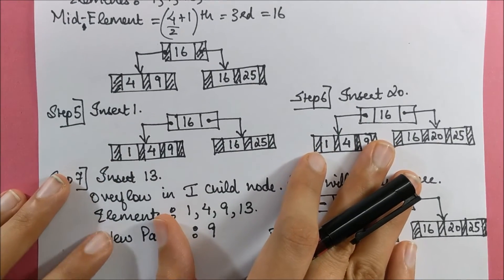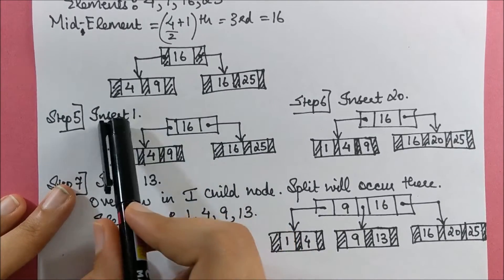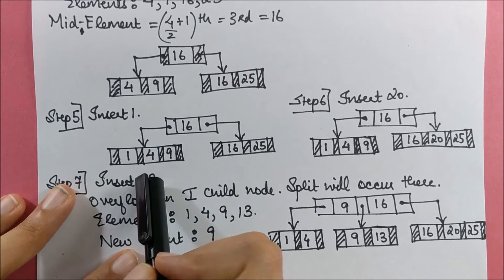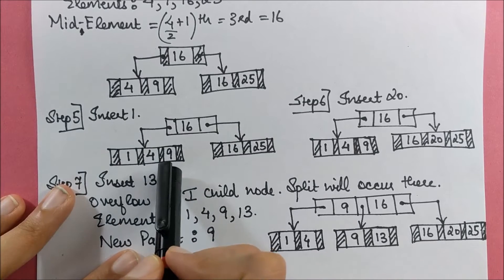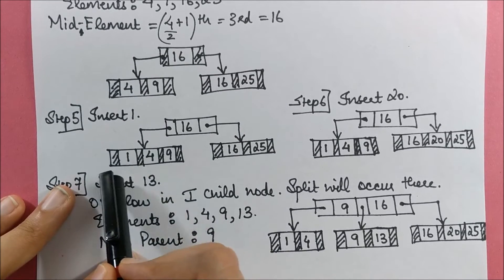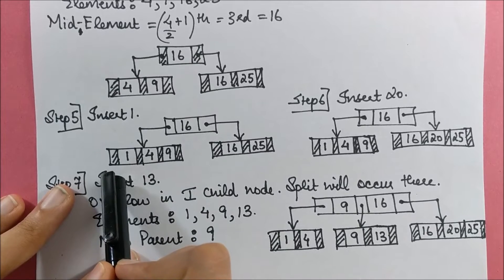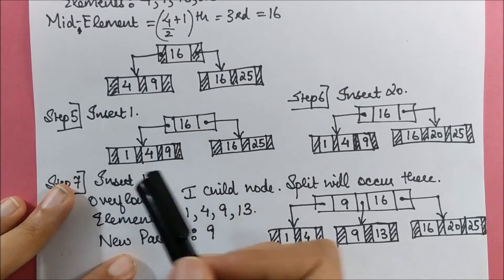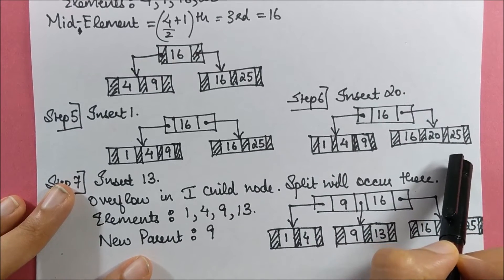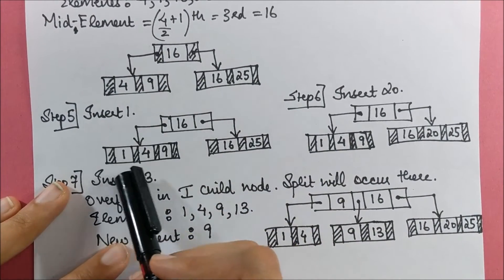To insert 1: compare with 16 — since 1 is less than 16, go to the left branch. In the left node, find the correct position by order and insert 1, giving: 1, 4, 9. That node is now full. Next, insert 20: since 20 is greater than 16, it goes into the right branch and is inserted there maintaining order. Next, insert 13: since 13 is less than 16, it goes to the left branch and causes a split.